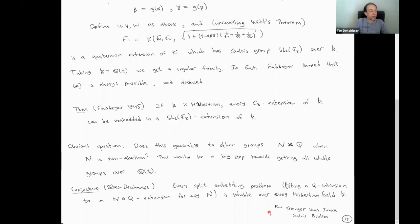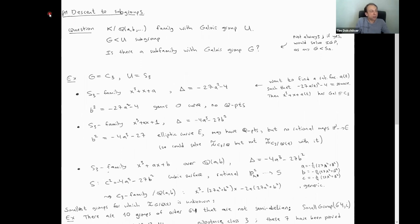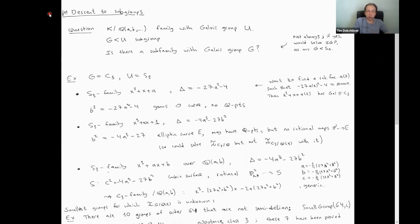That's all I want to say about the embedding problem. To finish, let me talk about two other methods. We've talked about semiabelian groups and split embedding problems — a very nice general method. Let me look at two other methods: one called 'descent to subgroups' and one called 'rigidity', which I think have potential to be pushed further and would be interesting research programs.